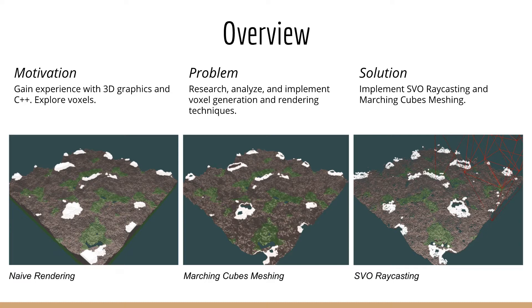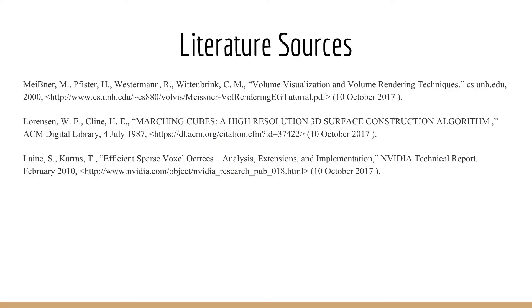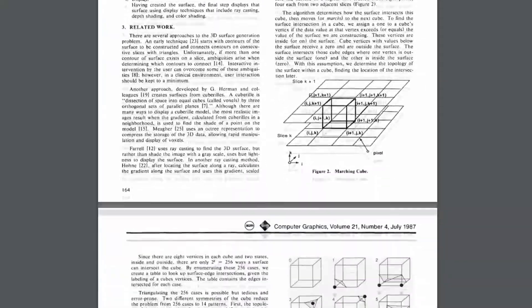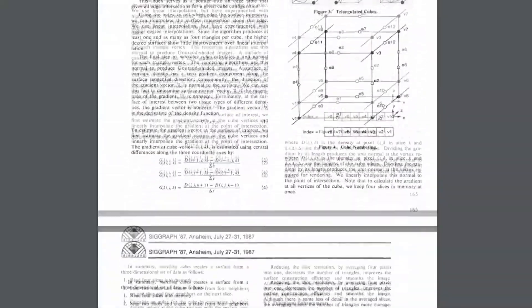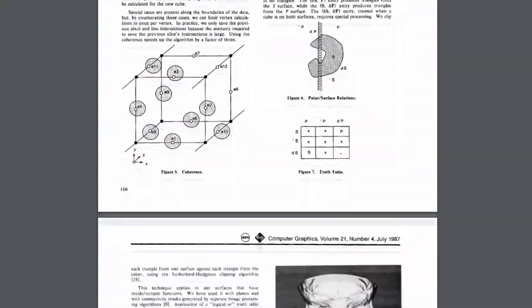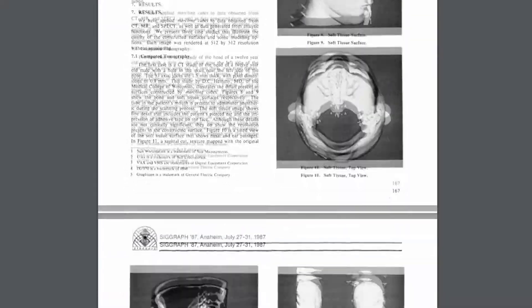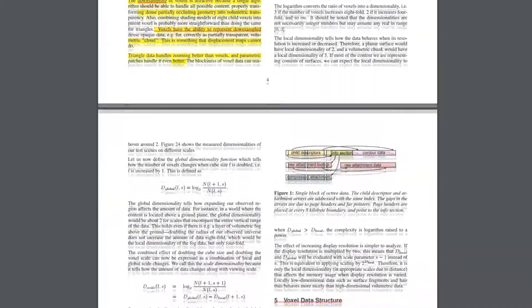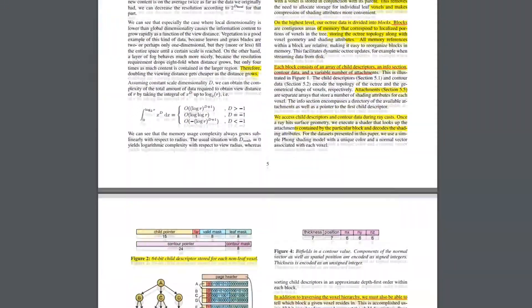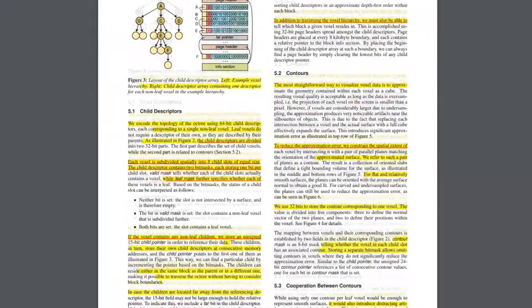In the end, I implemented a direct and indirect volume rendering technique, those being sparse voxel octree raycasting and the antiquated marching cubes algorithm respectively. To complete the project, I referenced a research paper titled 'Volume Visualization and Volume Rendering Techniques' for cursory knowledge about volume rendering, and the original marching cubes publication from all the way back in 1987. Beyond that, I derived my sparse voxel octree representation and raycasting algorithm from an NVIDIA technical report published in 2010.